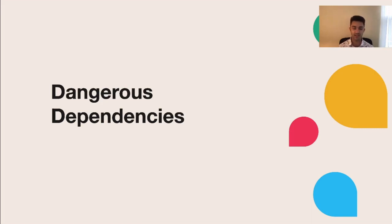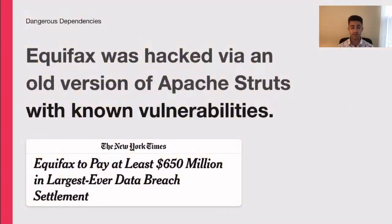Let's take a look at some examples of related issues. One of the most notable was Equifax. Equifax got hacked because they were running an old version of Apache Struts that had known vulnerabilities. This hack leaked 143 million social security numbers. Preventing this could have been as simple as upgrading their version of Apache Struts to one that did not have publicly known vulnerabilities.